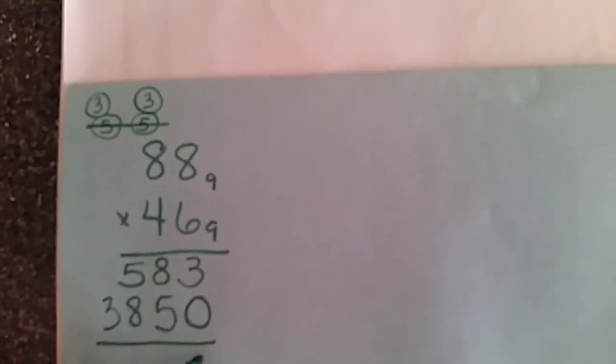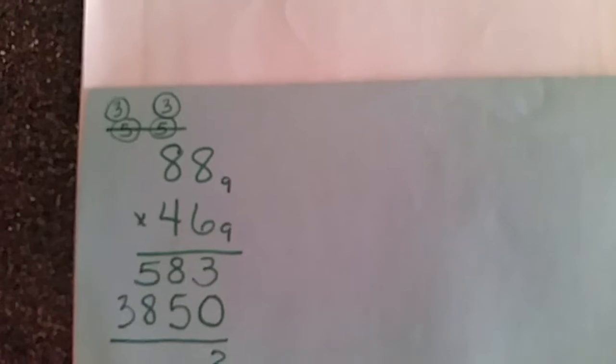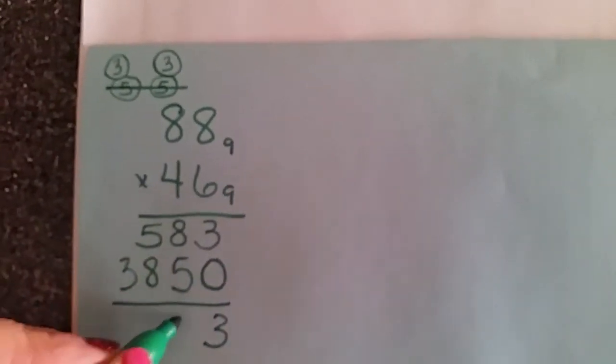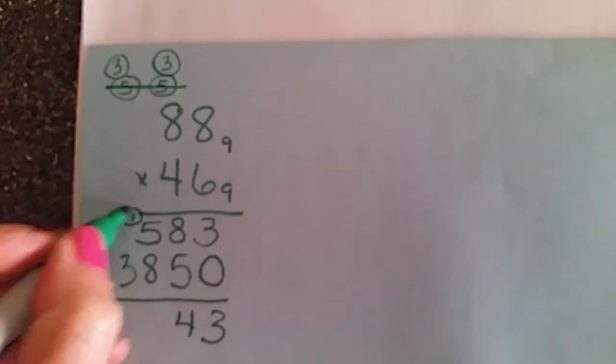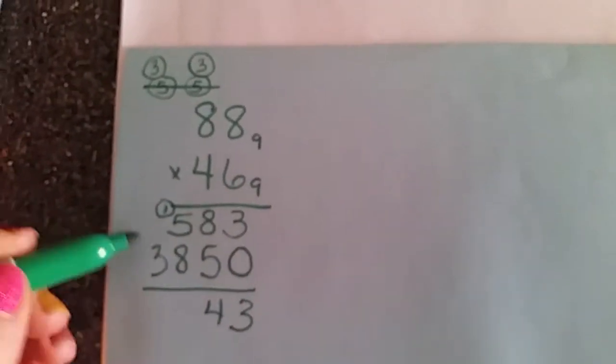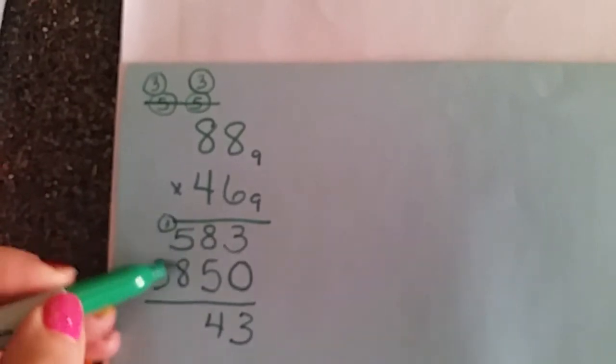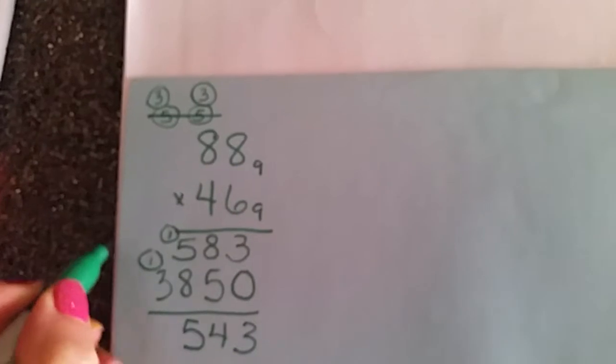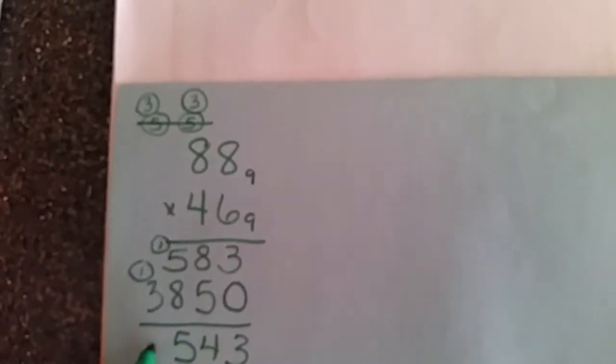And now we do our addition in base 9. So 3 plus 0 is 3. 8 plus 5, I'm seeing 8 plus 1 is a 9, with 4 leftovers. So 1 group of 9, 4 leftovers. Or you can think of it as 13, which is a 9 and 4. Here I've got, here's my 8 and 1. There's a group of 9, 5 leftovers. And then 1 plus 3 is 4.